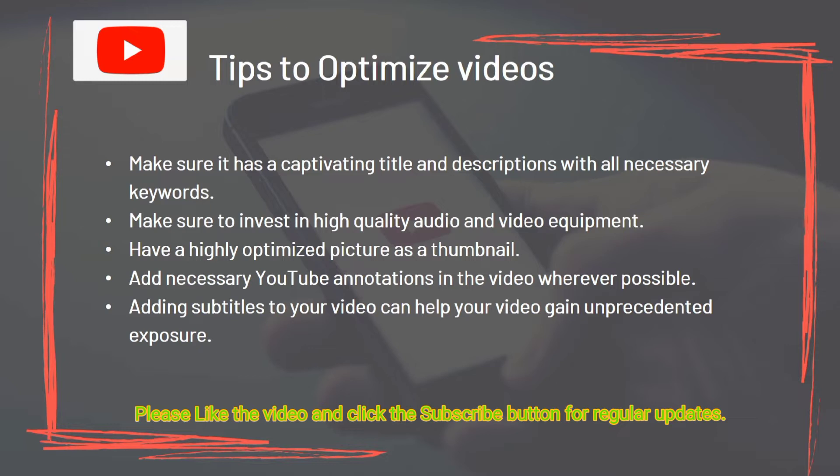Tips to optimize your videos: Make sure your video has a captivating title and descriptions with all necessary keywords. Invest in high-quality audio and video equipment. Have a highly optimized picture as a thumbnail. Add necessary YouTube annotations in the video whenever possible. Adding subtitles to your video can help it gain unprecedented exposure.